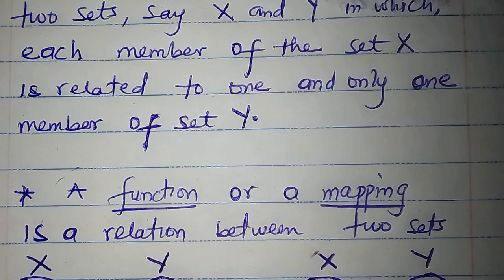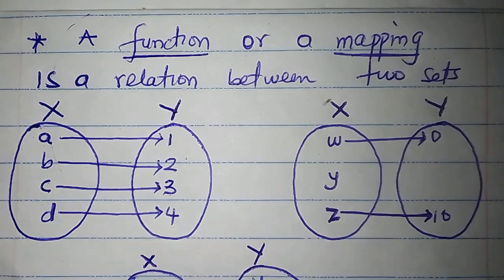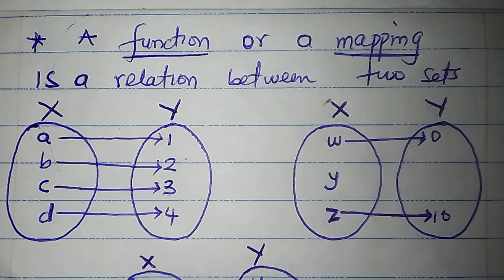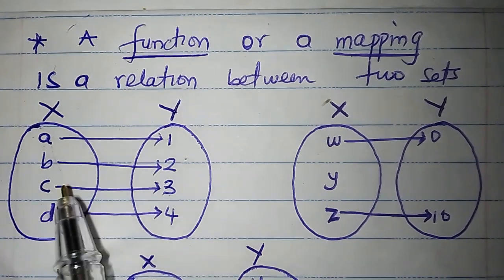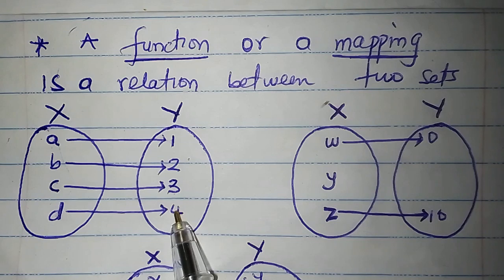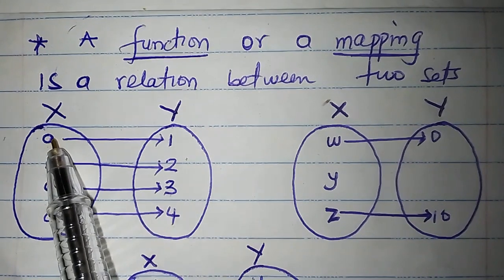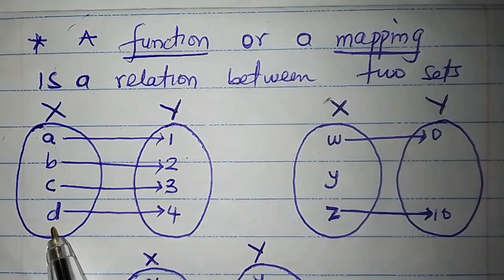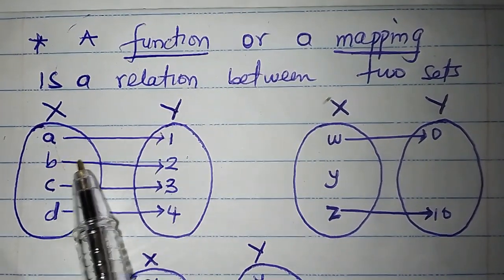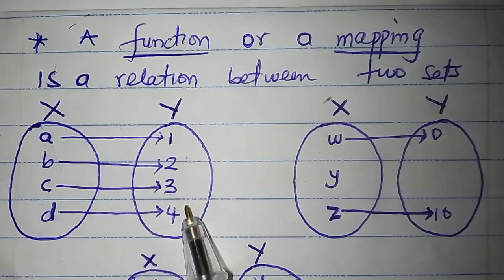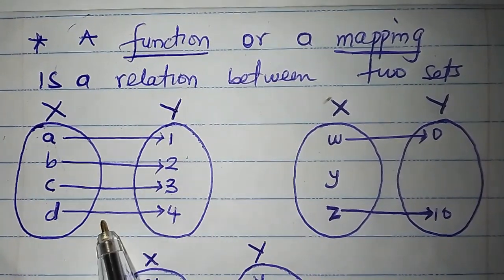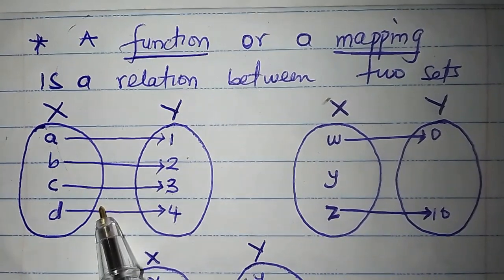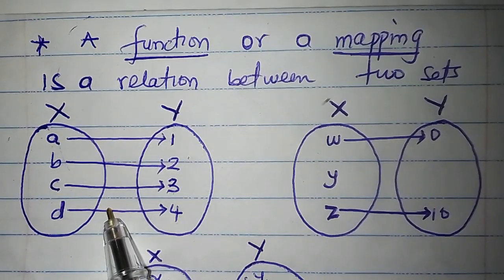Let's talk about it in detail and identify the functions we have here. By the definition, a function is a relation between two sets X and Y in which each member of set X is related to one member of set Y. In this case, set X has members A, B, C, D — each of them is related to only one member in set Y. So this is a function, since it satisfies the definition.